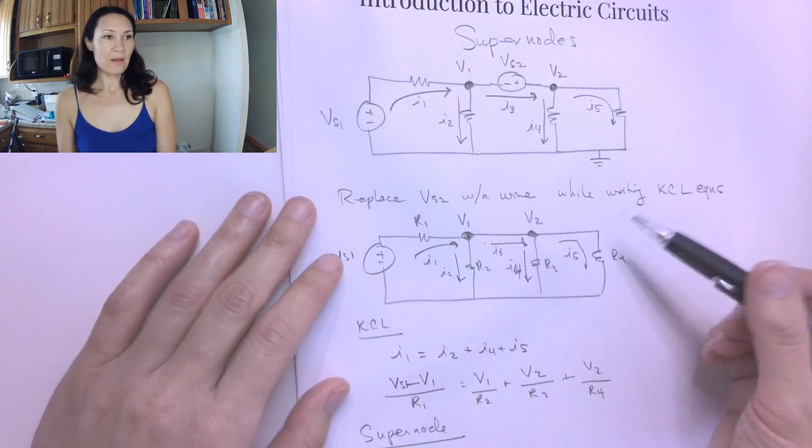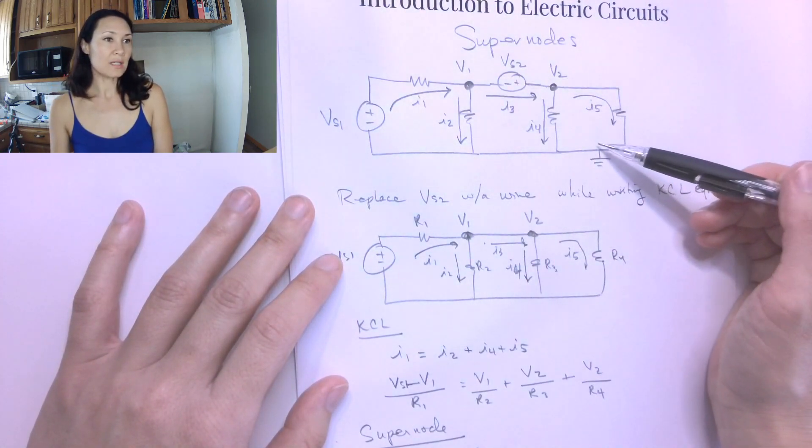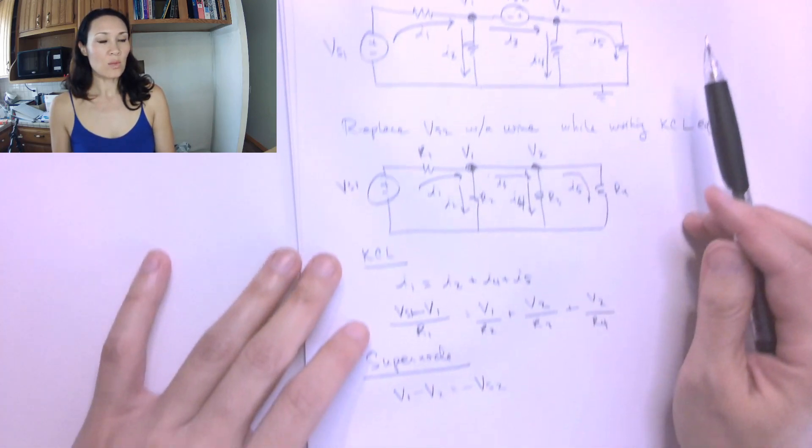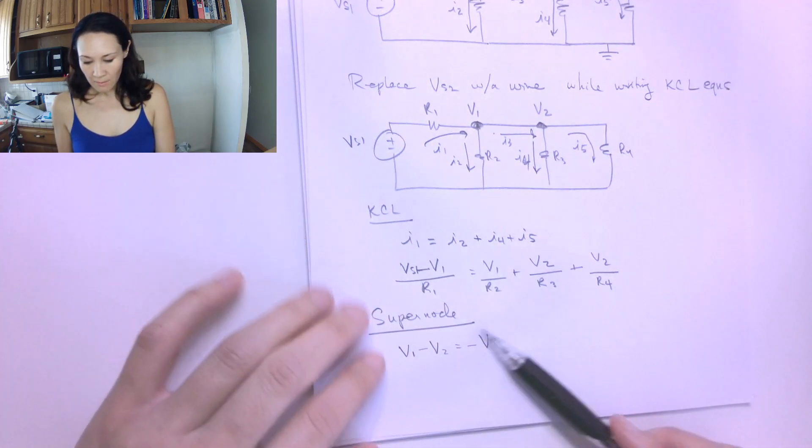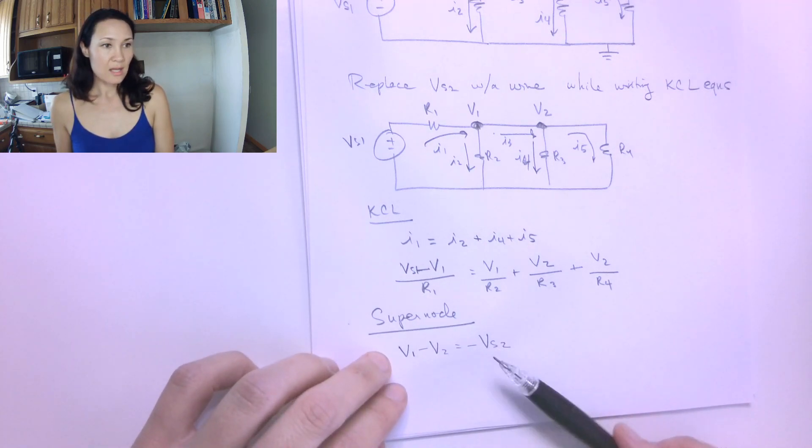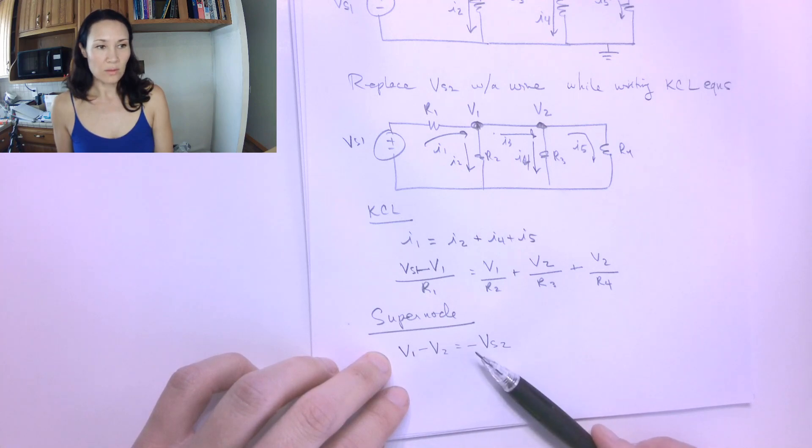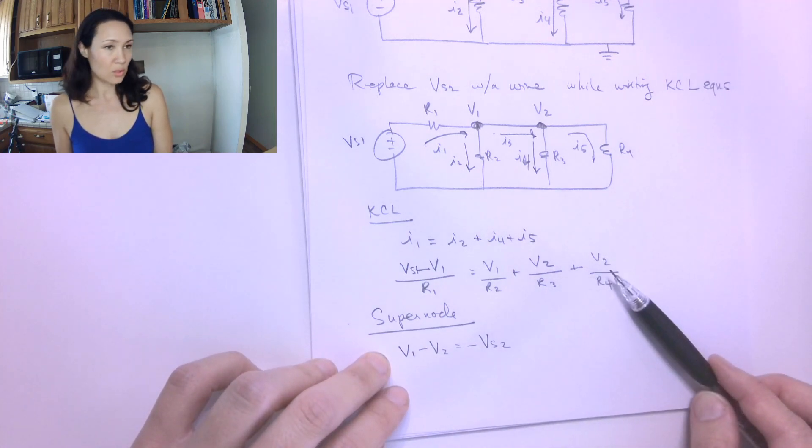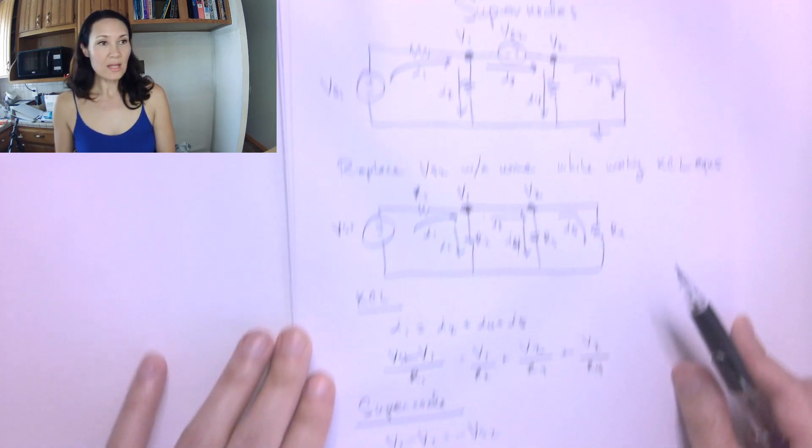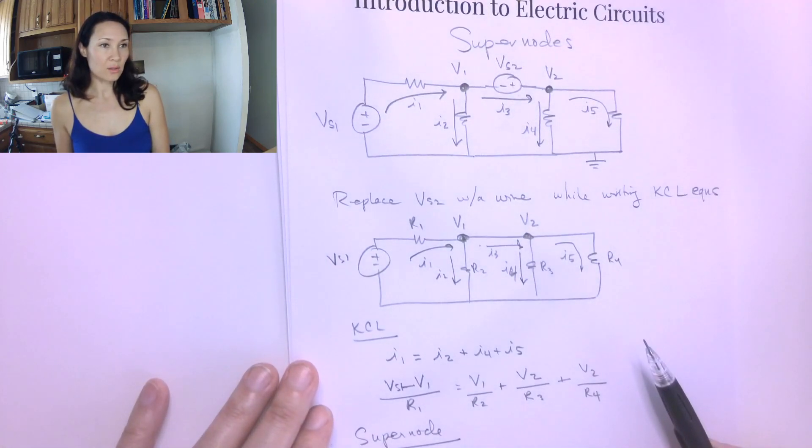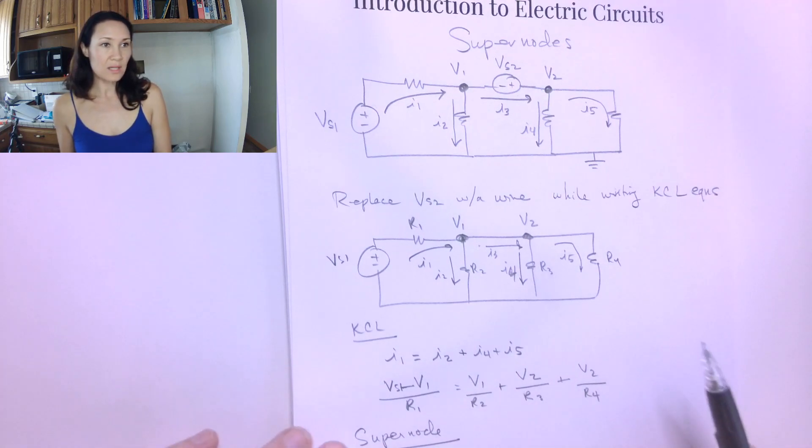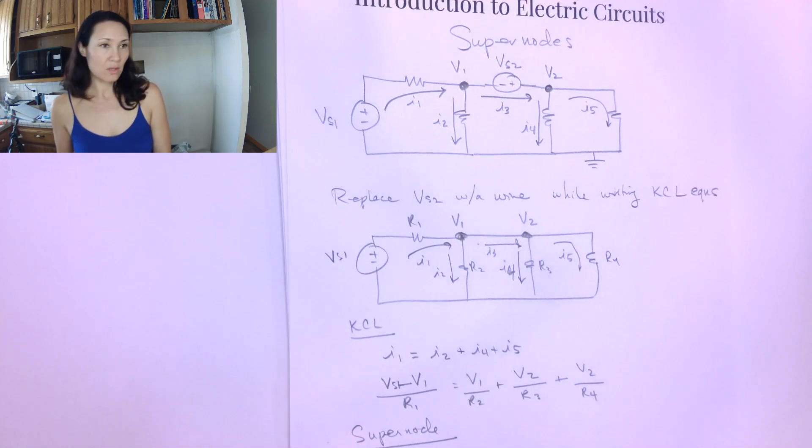Now, assuming that we have all of these values ahead of time, right? We know what this source voltage is. We know what this source voltage is. Then we can just come up, this is just going to be a constant like 10 volts or something like that. Now we have a way that V1 and V2 are related that we can make a substitution into this equation to solve for V1 and V2. So that is the general process for how to handle a super node. In the next video, I'll show you a specific example so that you can see how the computation works.